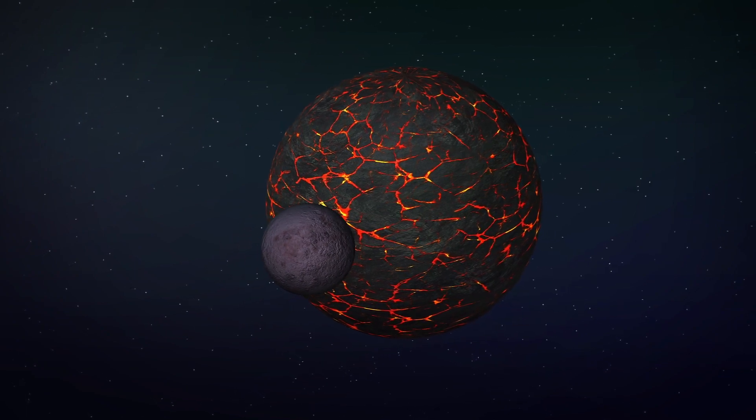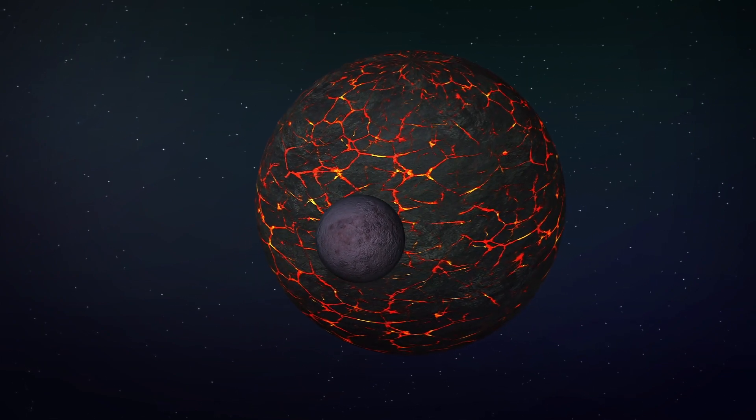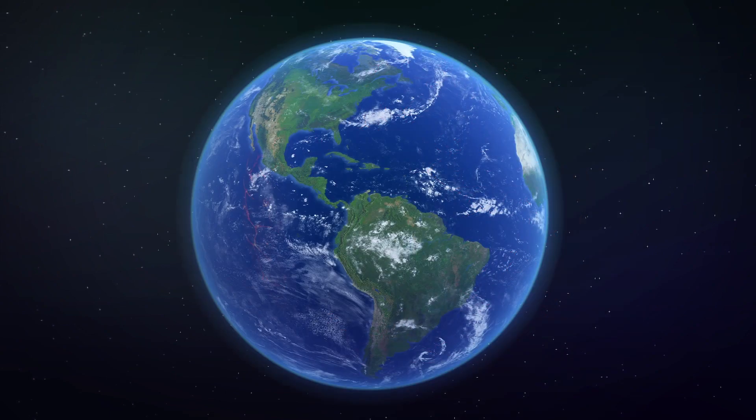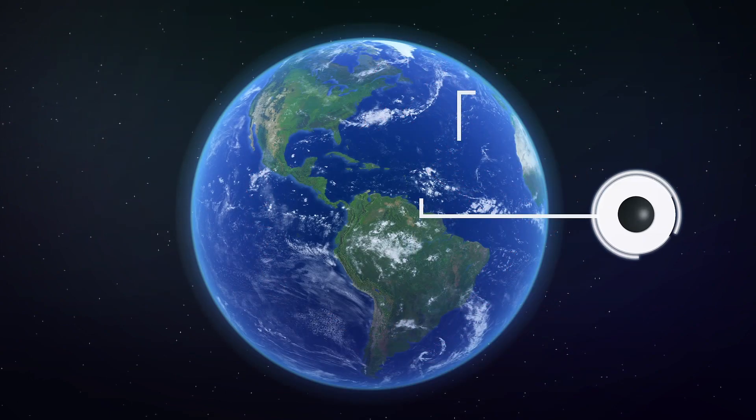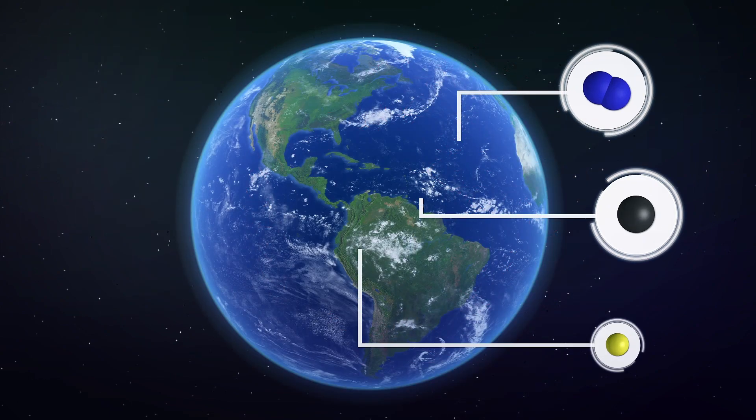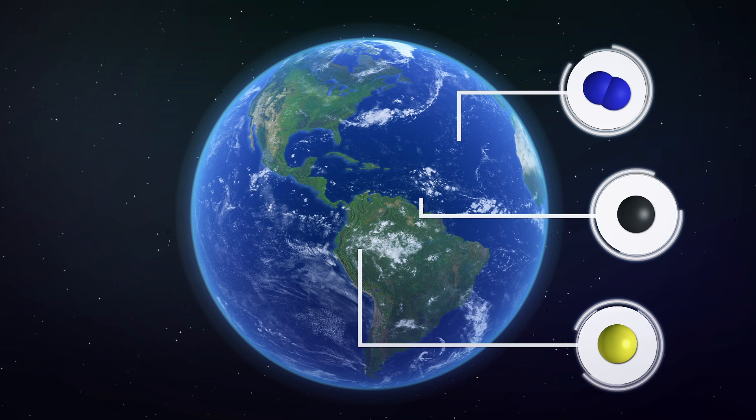The results were then fed into computer simulations that were able to determine the size and chemical composition of the impacting planet. The team concluded that Earth's volatiles arrived from a collision with an embryonic planet that had a sulfur-rich core.